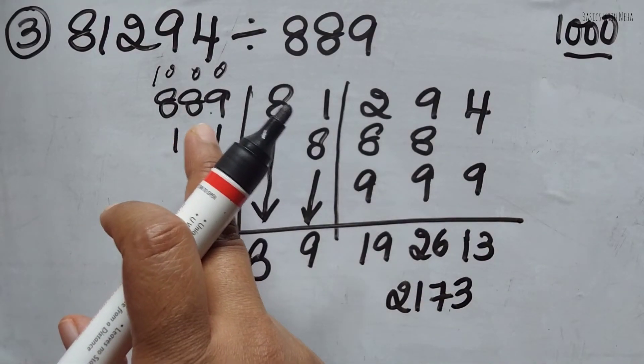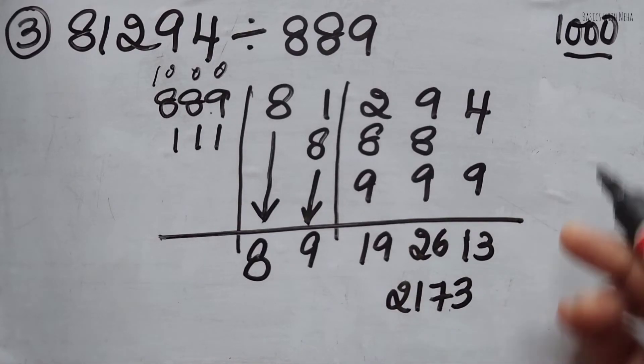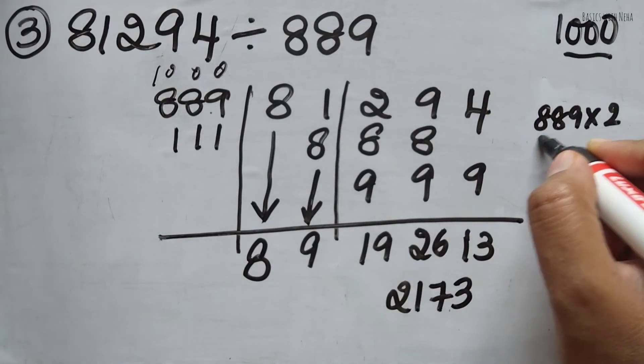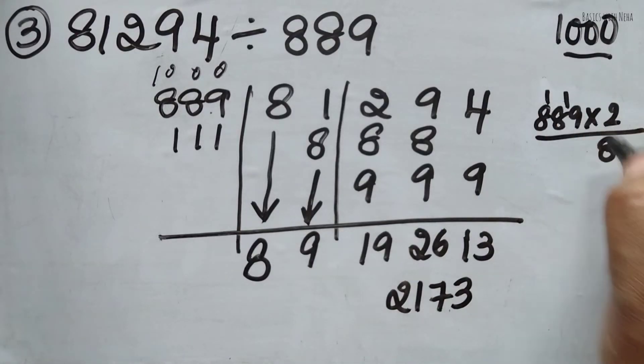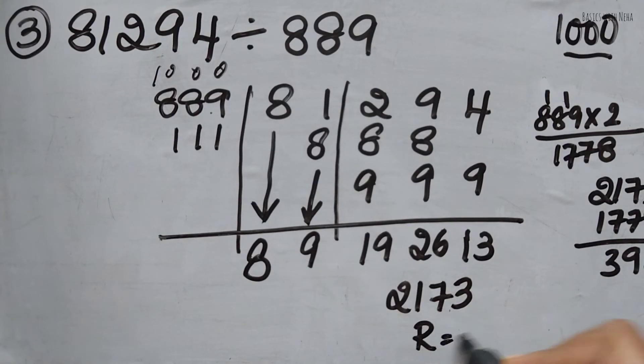Now I have to check how many times is 889 will be near to 2,173 or it will be 2,173. So if I do 889, so 900 two times is 1,800, so I have to do only 2 times. 889 into 2. 9 twos are 18, 16, 17. So it is 2,173 minus 1,778. 5, 9, 3, which is 395. So the new remainder formed is 395.